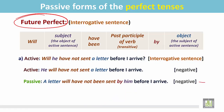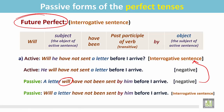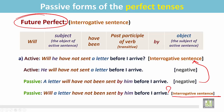Finally, change this negative sentence into an interrogative sentence by placing 'will' at the beginning of the sentence, before the subject: 'Will a letter have not been sent by him before I arrive?' And it is an interrogative sentence in the passive form.